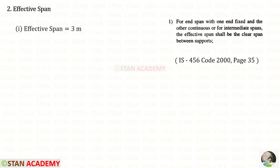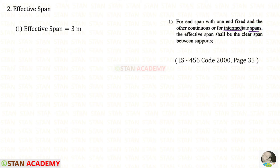Now let us find the effective span. For end spans with one end fixed and the other continuous, or for intermediate spans, the effective span shall be the clear span between the supports. Since we are designing an intermediate span, the effective span is taken as the clear span, which is 3 meters as given.